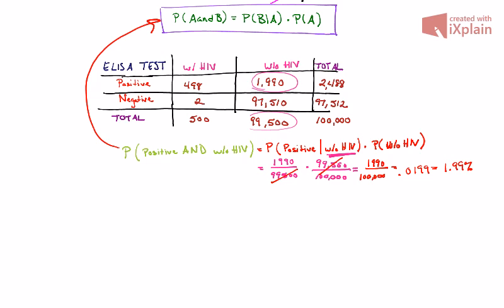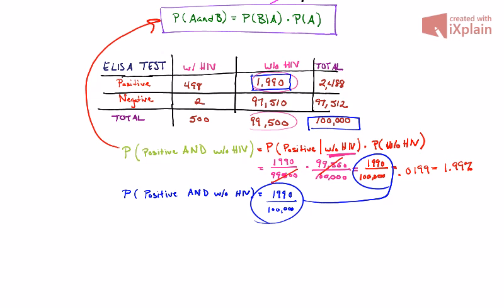The way that we have it here, I provided you the table so that you can actually verify that. If we were to just use the table in general, we could say the probability of someone testing positive and being without HIV refers to these individuals here. These are the individuals without HIV and who tested positive. So that's going to be your 1,990 people out of your entire pool here, your 100,000. So it does take us back to the same work.